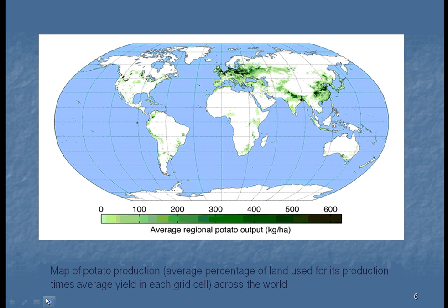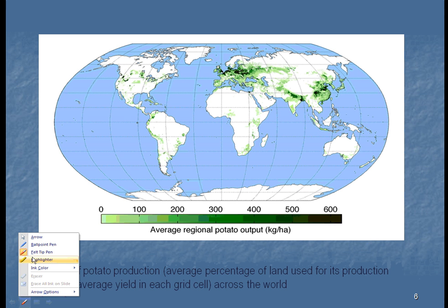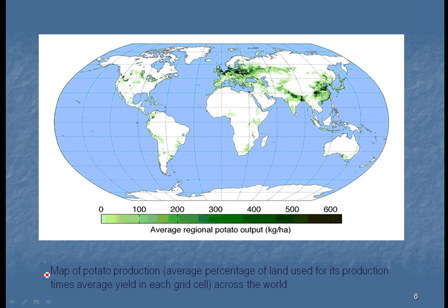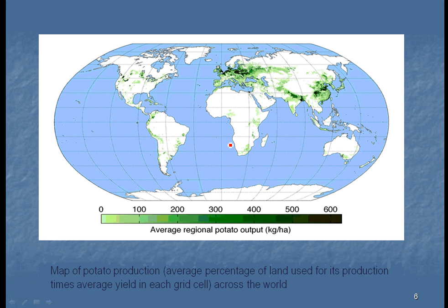This is a map of the world where potatoes are being produced in large quantities. Looking at the United States, there are some potatoes being grown there, but the darker colors — indicating higher production — are over in Europe, and surprisingly, a lot in China and India. We tend to think of China and India as places where people eat a lot of rice, but there is an awful lot of potatoes being grown there.